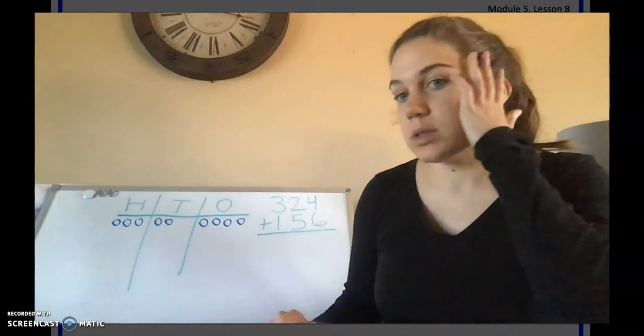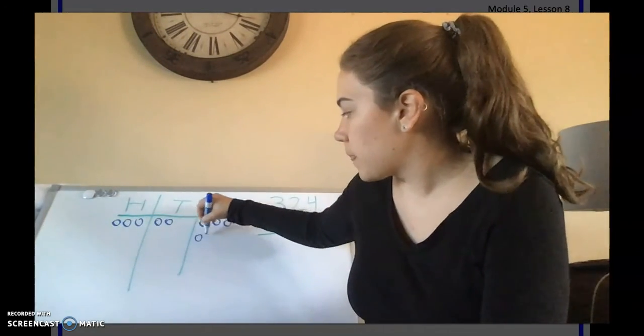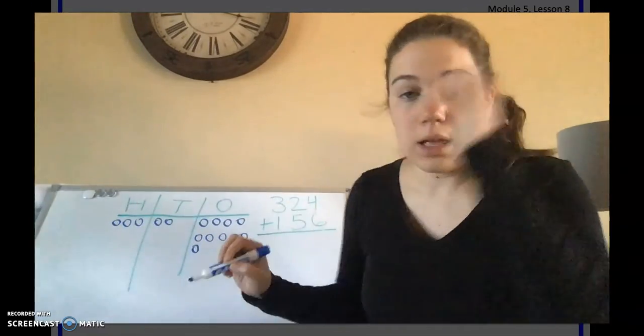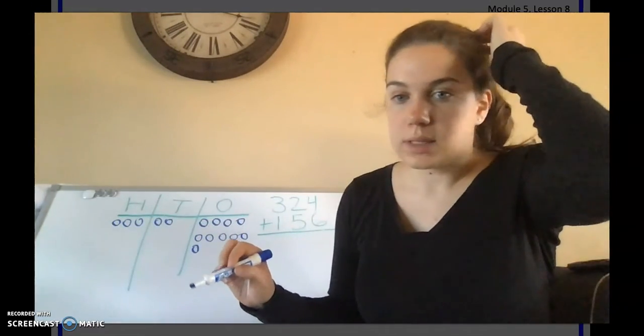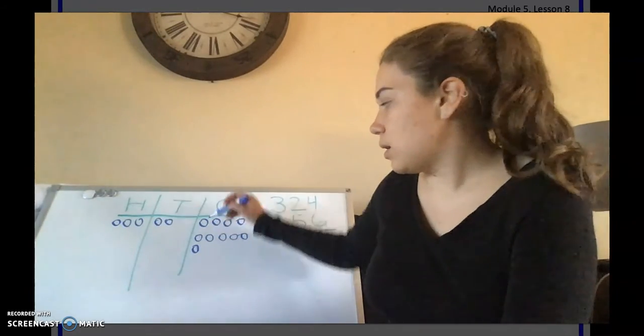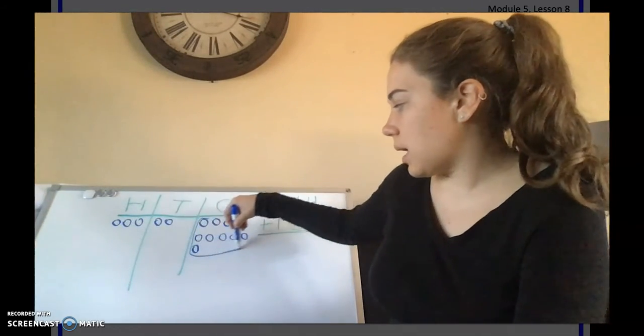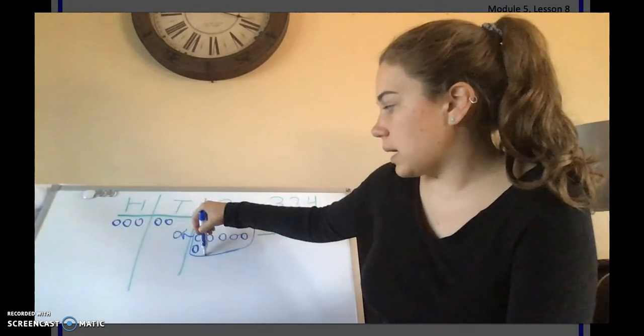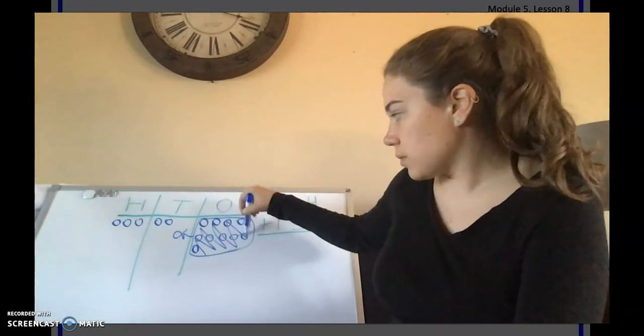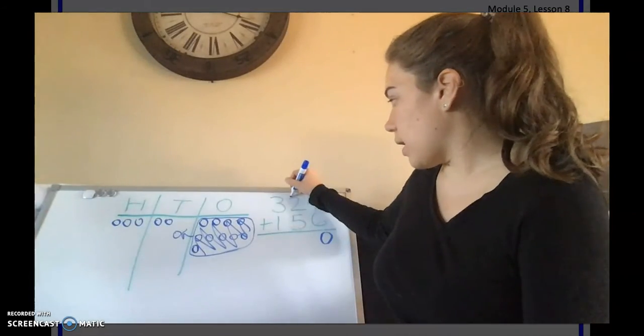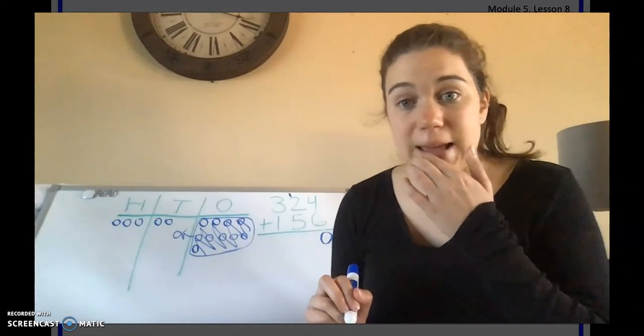So 1, 2, 3, 4, 5, 6. Let's count how many we have in our ones column: 1, 2, 3, 4, 5, 6, 7, 8, 9, 10. Oh, we got to trade in 10 ones for 1 ten. So now there are no ones and we brought over in exchange 1 ten.